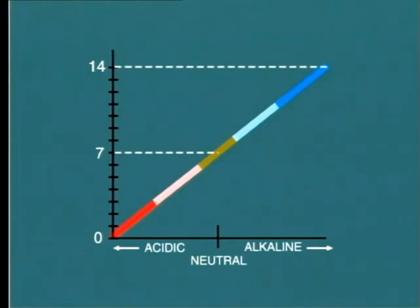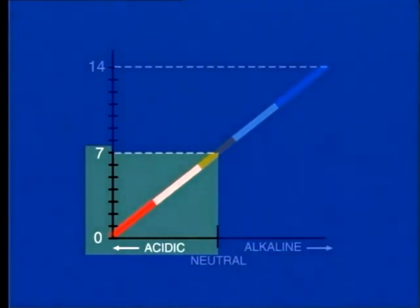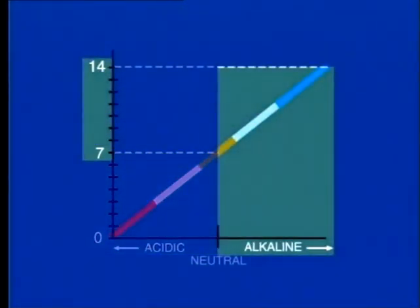The value of 7 is generally recognized to be neutral, with lower numbers indicating an increasing degree of acidity, while higher numbers from 7 to 14 indicate alkalinity.